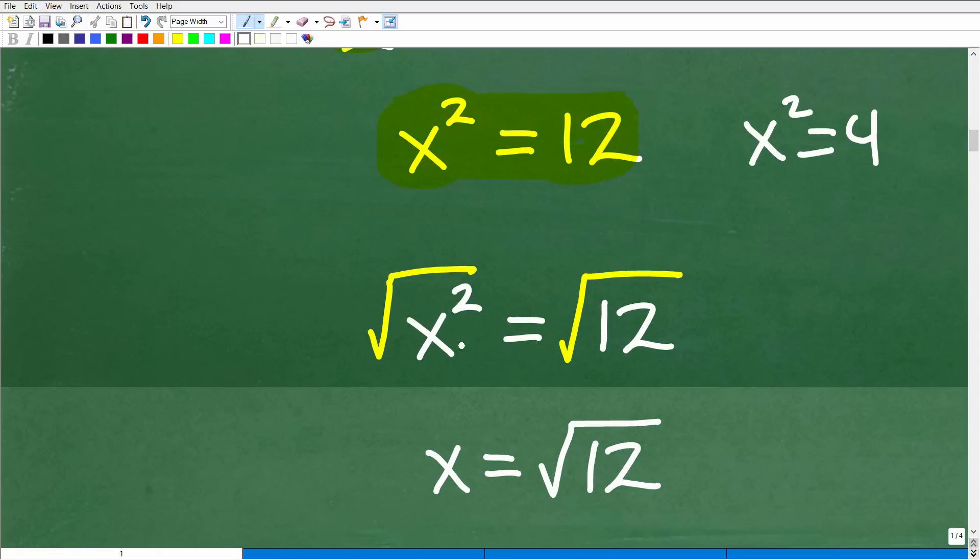So, all we need to do right now is take the square root of both sides. And when we do that, we're going to have the square root of x squared is, of course, x. And the square root of 12 is square root of 12.